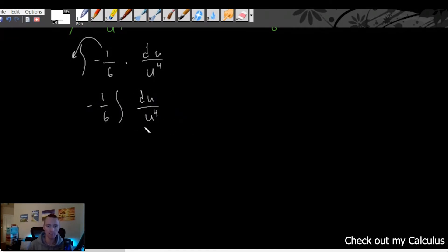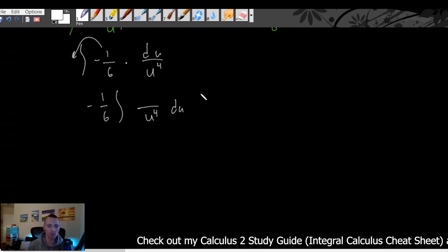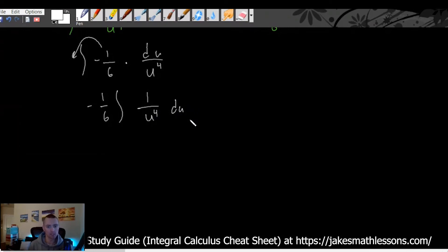Well really this is the exact same thing. We can basically just move that out of the fraction and tack it on to the end over here. So we can write du over here and then just replace it with a one. So du over u to the fourth is the same as one over u to the fourth times du.